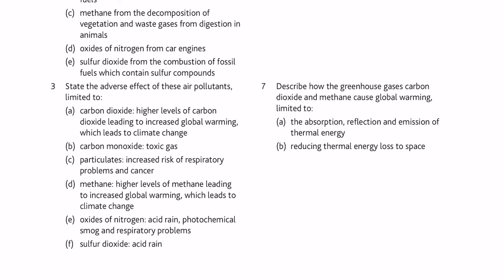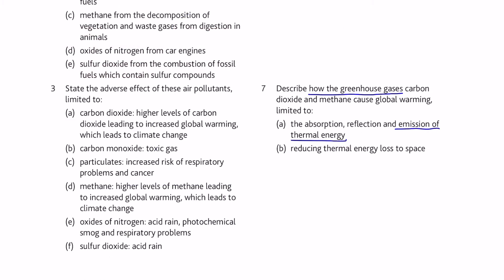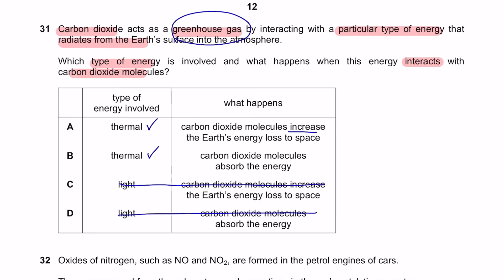Under 10.3, you will learn how the greenhouse gases cause global warming, whereby it happens from the emission of thermal energy. So the type of energy involved is thermal energy. And what happens is that this will reduce the thermal energy loss to space. This says that it increases the energy loss to space. It's wrong. It reduces the loss of energy in space by absorbing the energy. So the answer is B.